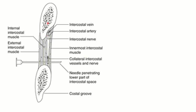This is the lower border of the upper rib. This is the upper border of the lower rib. The upper border of the lower rib can be divided into an outer part and an inner part. The external intercostal muscle is attached to the lower border of the upper rib and the outer part of the upper border of the lower rib. From the costal groove, the internal intercostal muscle is attached, and from the ridge, the innermost intercostal muscle is attached. These two muscles are attached to the inner part of the upper border of the lower rib, and the intercostal vein, artery, and nerve are situated in between the intercostal muscle and the innermost intercostal muscle.